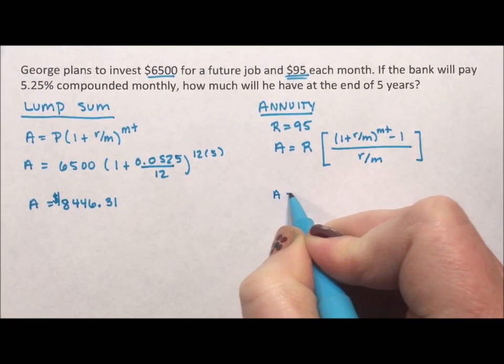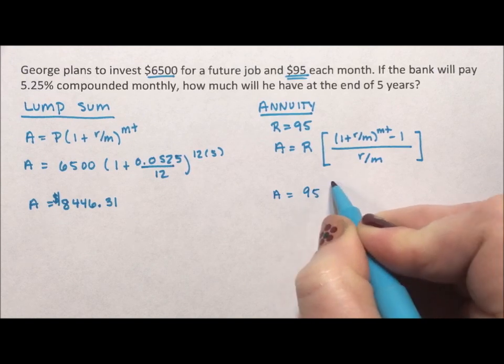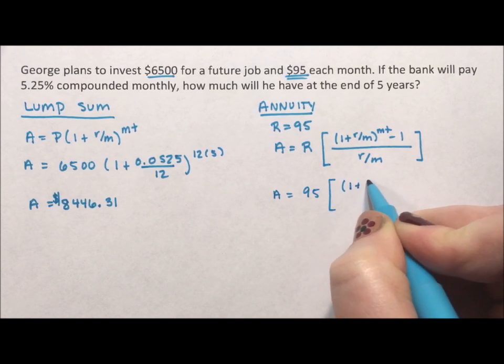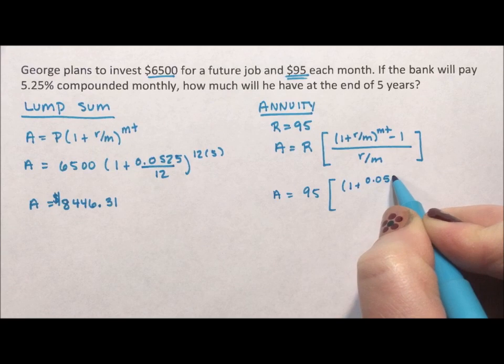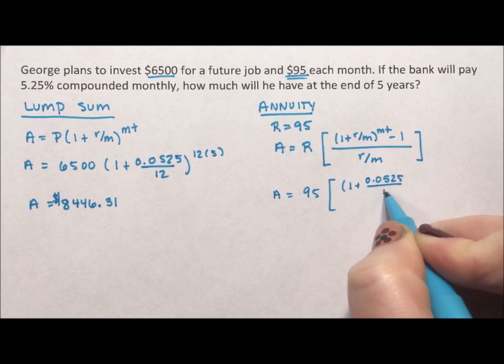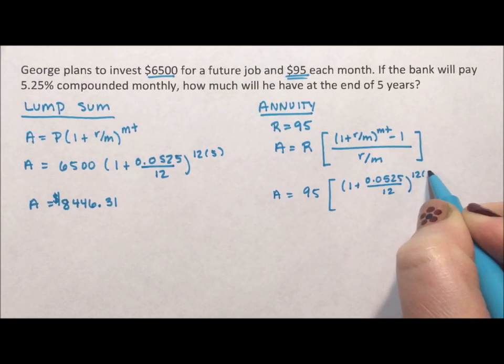So for our annuity, he's investing $95. The interest rate is still 0.0525. It's the same account, compounded still monthly. It's still for five years.